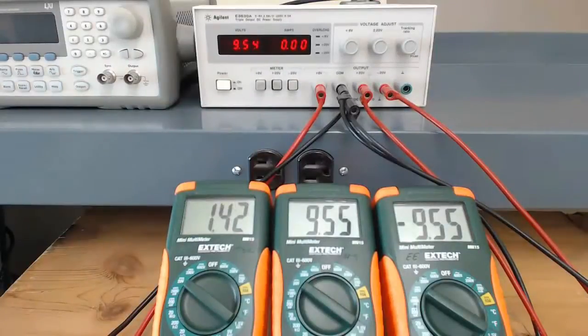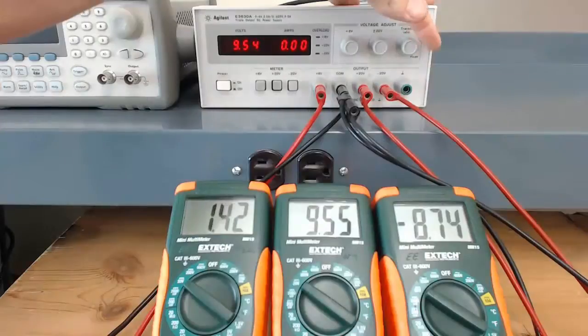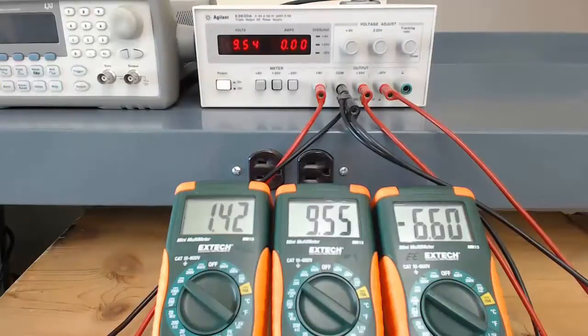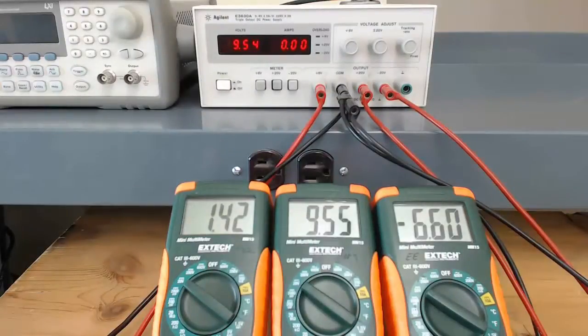Let's see what the tracking ratio knob does. Watch the multimeter on the right. As I turn the knob counterclockwise, the output of the minus 20 volt output decreases, while the output of the plus 20 volt output remains the same. This gives us some extra flexibility in the output voltages we can obtain.